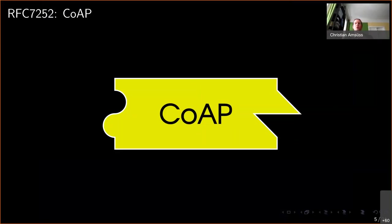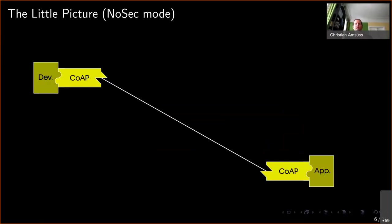CoAP from an operating system point of view — from an application developer's point of view — is a thing that converts request and response semantics down to a socket interface, which in our case will usually be UDP. In a concrete setup we have a constrained device on one side, the application receives requests and produces responses, those go through a CoAP stack which sends messages over the network, and on the other side there's a CoAP stack again. The application sees a request-response pattern — this is the minimal picture without security.